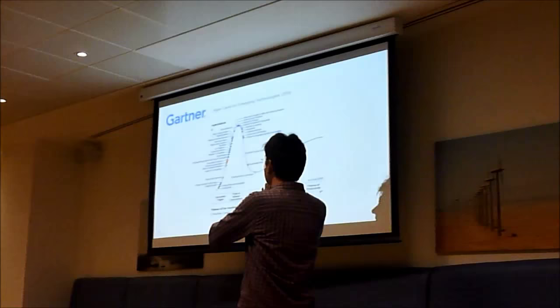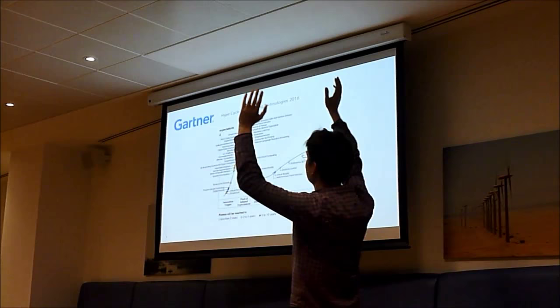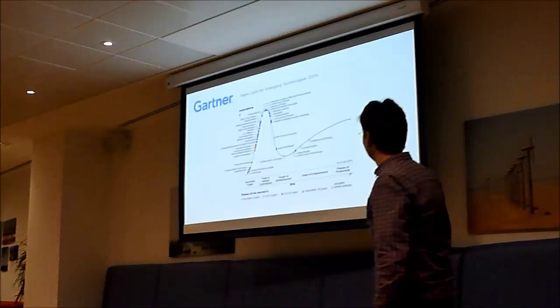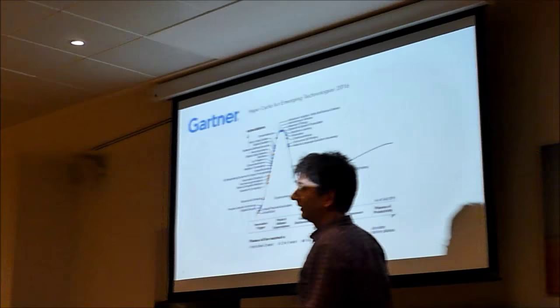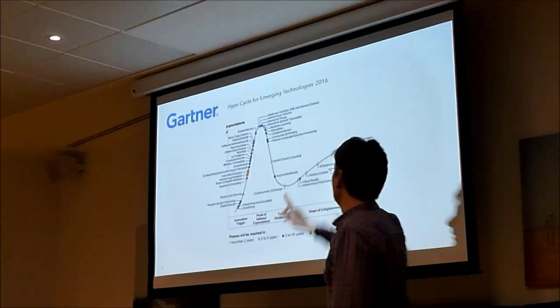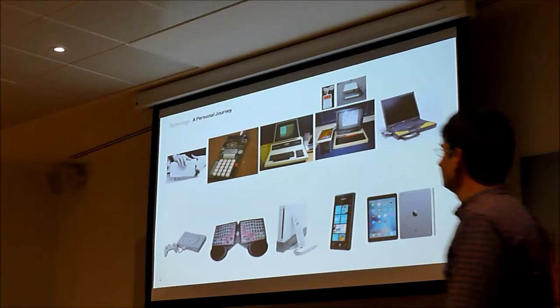Gartner looks at technology trends and where things are going on this interesting cycle: innovation, peak of inflated expectations, trough of disillusionment, enlightenment, plateau of productivity. Virtual reality is on its way up the slope of enlightenment. Augmented reality has a bit of a way to get through the trough of disillusionment.